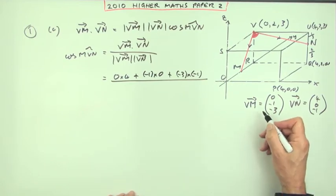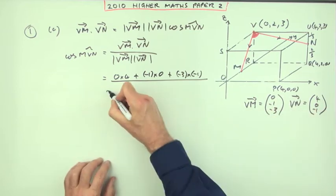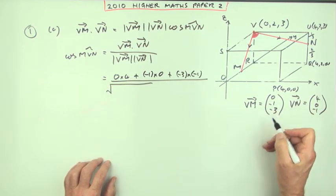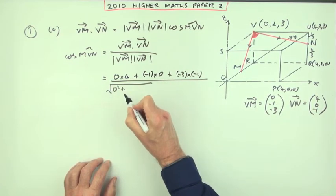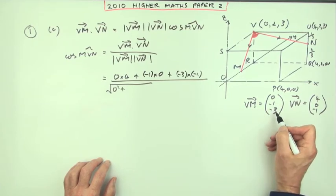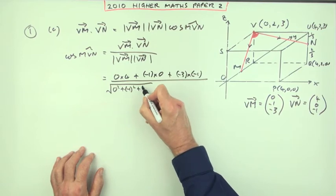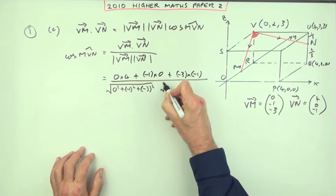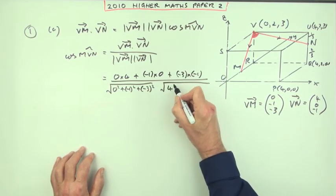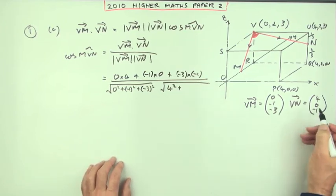Well, the magnitude will just be Pythagoras in three dimensions. So it's the square root of, square the three parts, zero squared, and you can even just write one squared and three squared, because square and a negative is the same result. But I'll put it down, negative one squared, negative three squared, multiplied by, same with this, square and add the components.